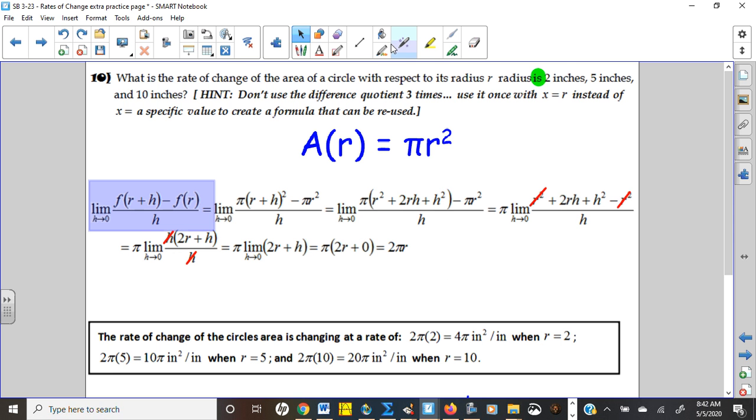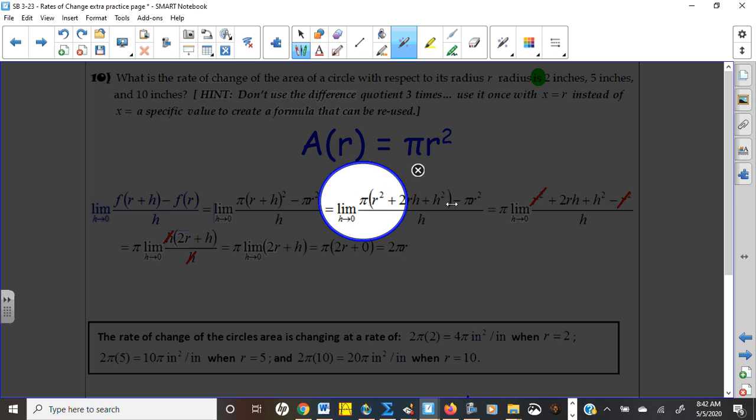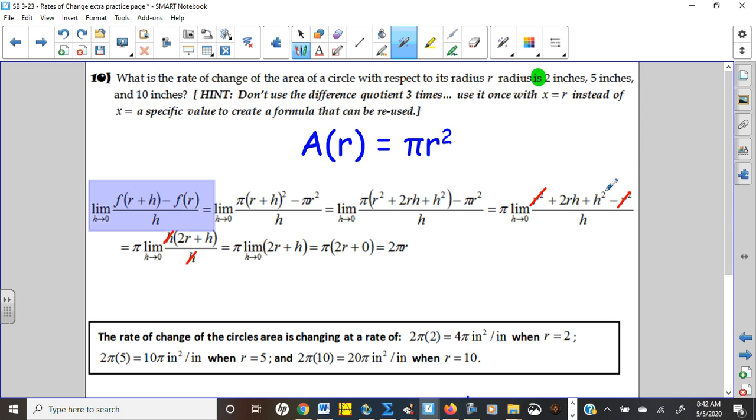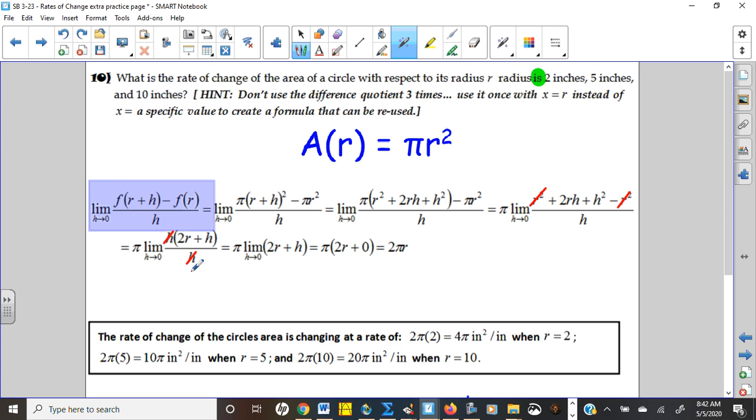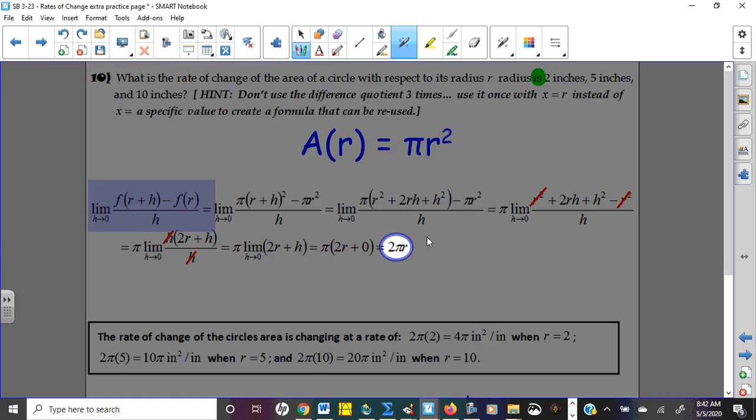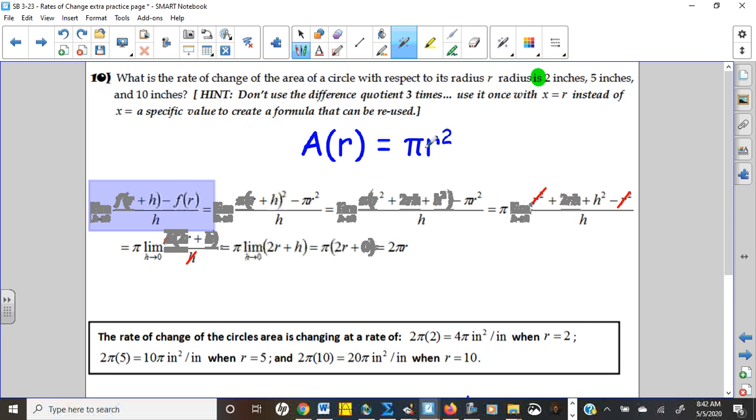Notice how as soon as I could, I took this pi right here and canceled it out or factored it out so that I didn't have to deal with the pi inside. And then I was just dealing with the simple terms. The R squareds cancel. We can factor the H out just like we have seen time and time again. And we get two pi R. So two pi R is your formula to generate slopes anywhere for that function.